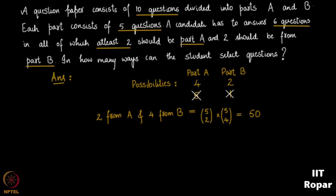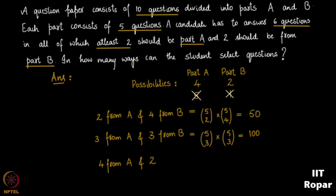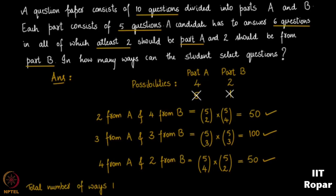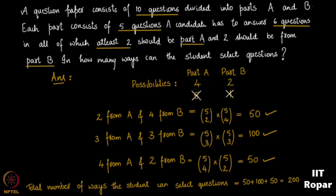For possibility 2, answering 3 from part A and 3 from part B, the number of ways is 5C3 into 5C3, which evaluates to 100. For possibility 3, answering 4 from part A and 2 from part B, the answer is again 50 by symmetry with possibility 1. The total number of ways the student can select the questions is 50 plus 100 plus 50, by the rule of sum, which equals 200.